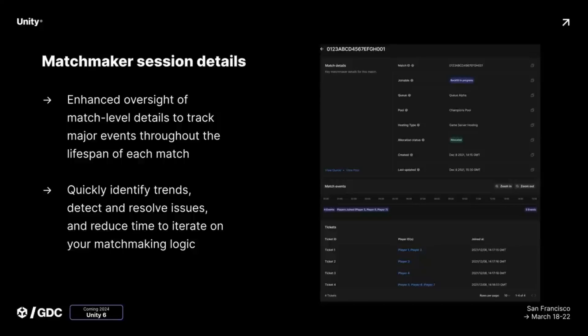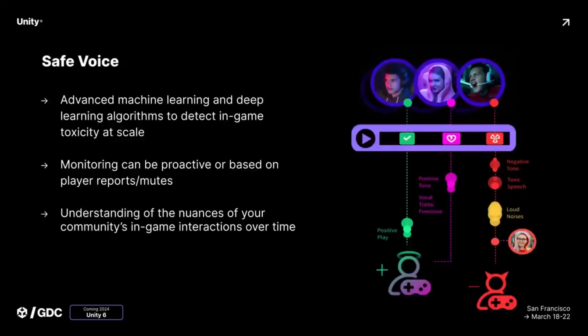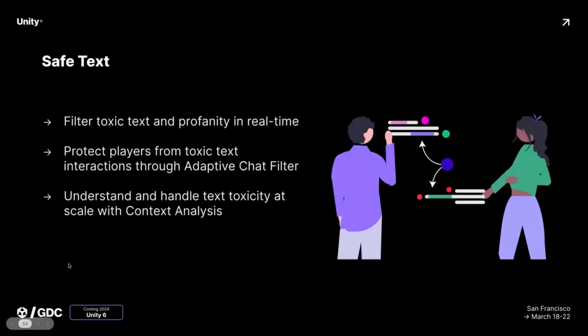Another area they covered was SafeVoice — an AI and machine learning solution for voice and text chat that detects toxic behavior, basically like Xbox Live moderation. Machine learning will be able to handle things like people screaming or yelling profanities. They're also rolling out SafeText, which takes text-based chat and removes profanity and insulting speech — basically real-time censorship of text in your game. Quite an interesting approach.